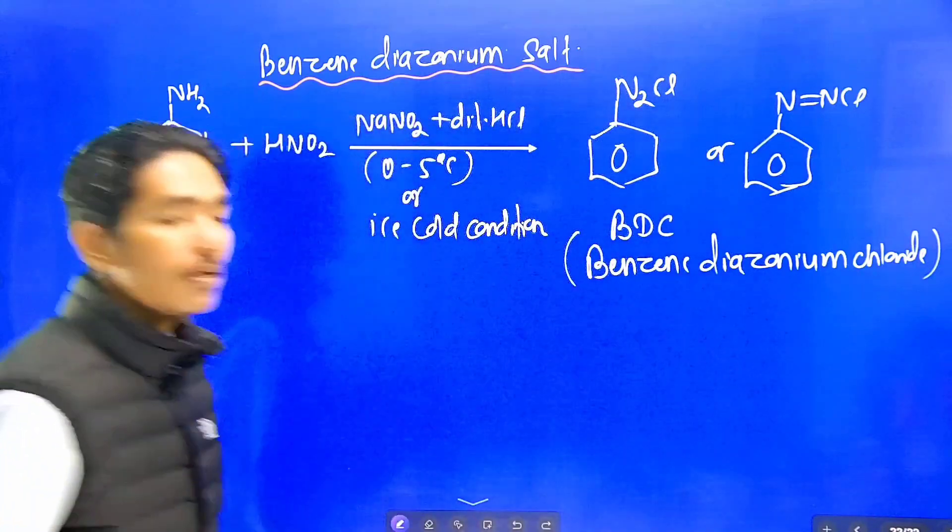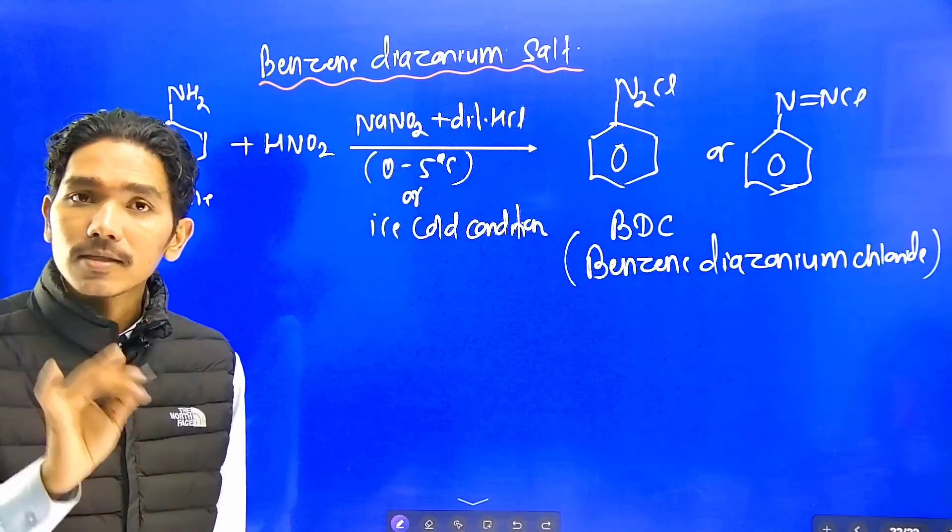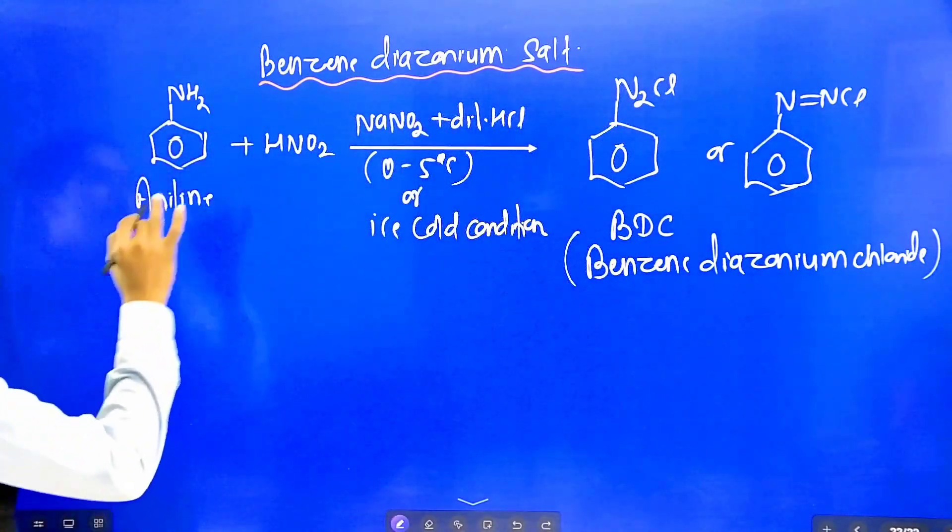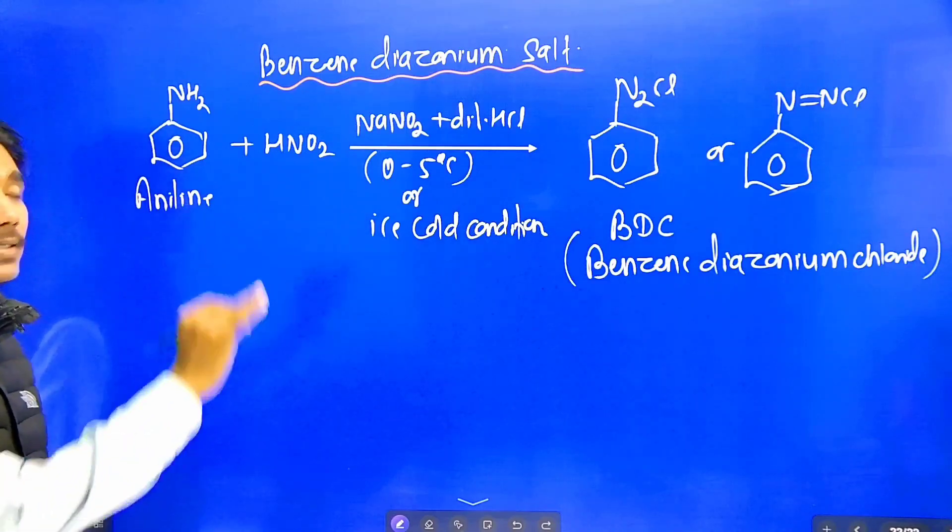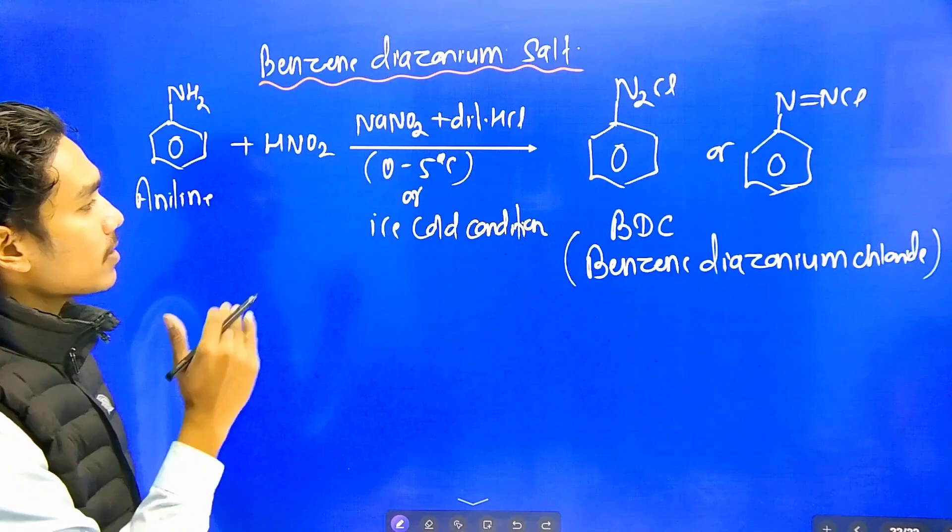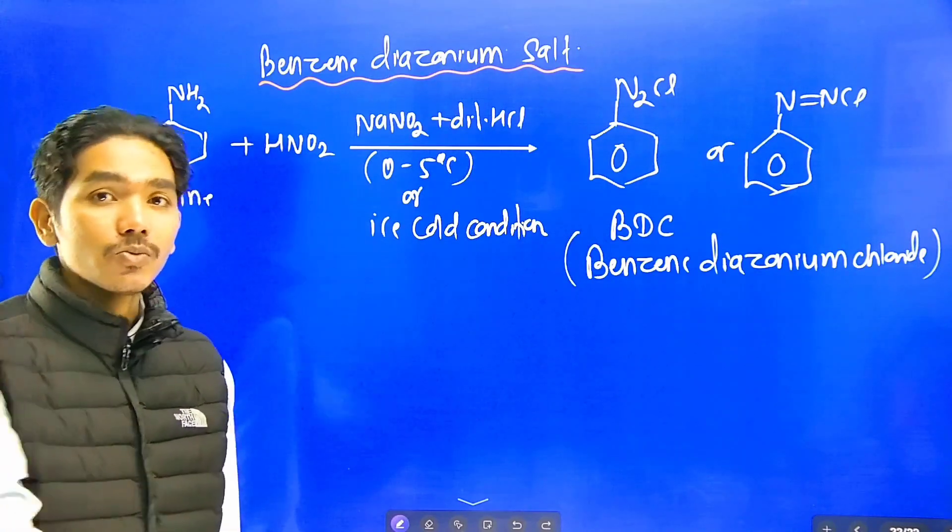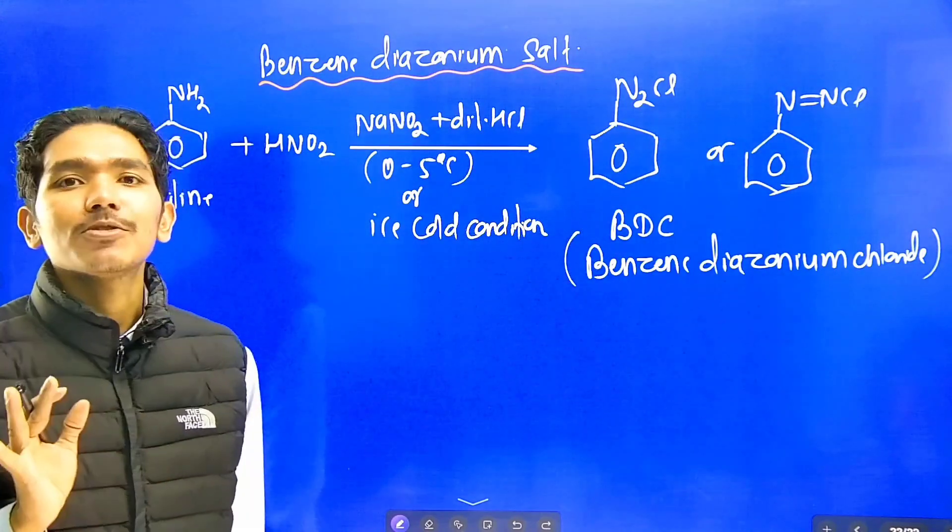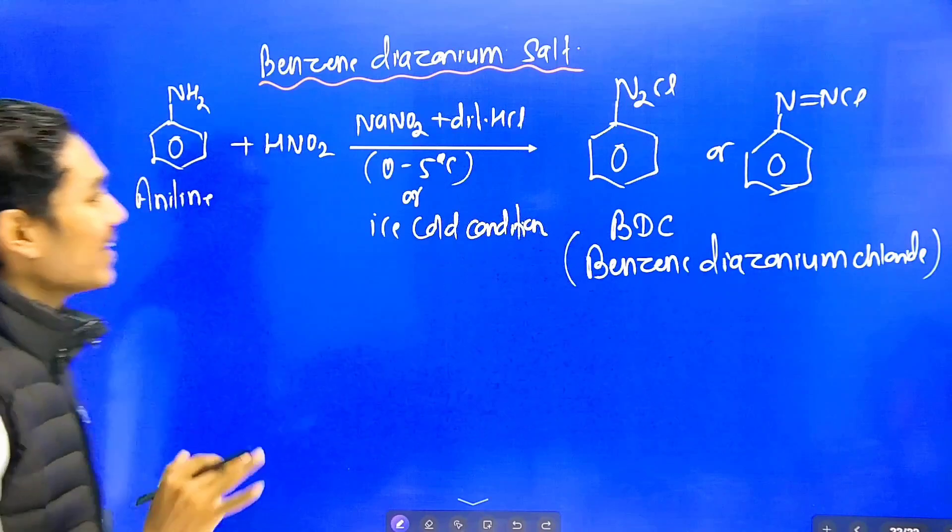When we take aniline and nitrous acid at 0 to 5 degree Celsius under ice cold conditions with HNO2 plus diluted HCl, then benzene diazonium salt formation occurs.